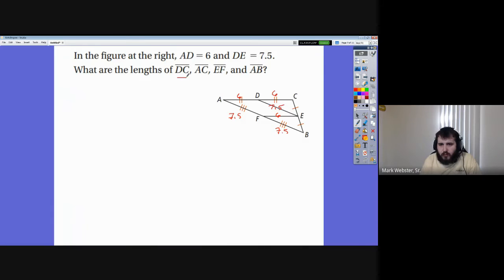So what do we want to know? We want to know what DC is. Oh, well, we have that. That's 6. We want to know what AC is. Well, what's 6 and 6? That's 12, isn't it? We want to know what EF is. Well, that's also 6. And we want to know what AB is. That's this whole thing. 7.5 plus 7.5 is 15. See how easy that is? Take the time to write things down, and it gets easy. But if you don't write it down, it can be a pain in the butt. Don't do that to yourself.